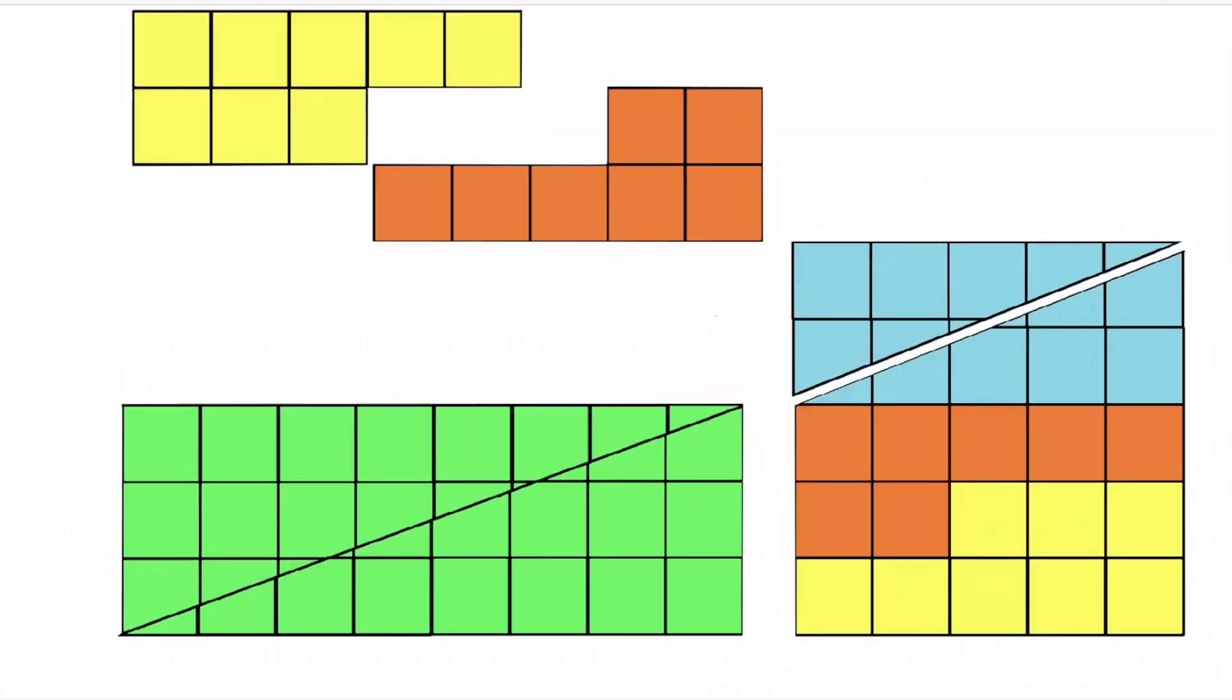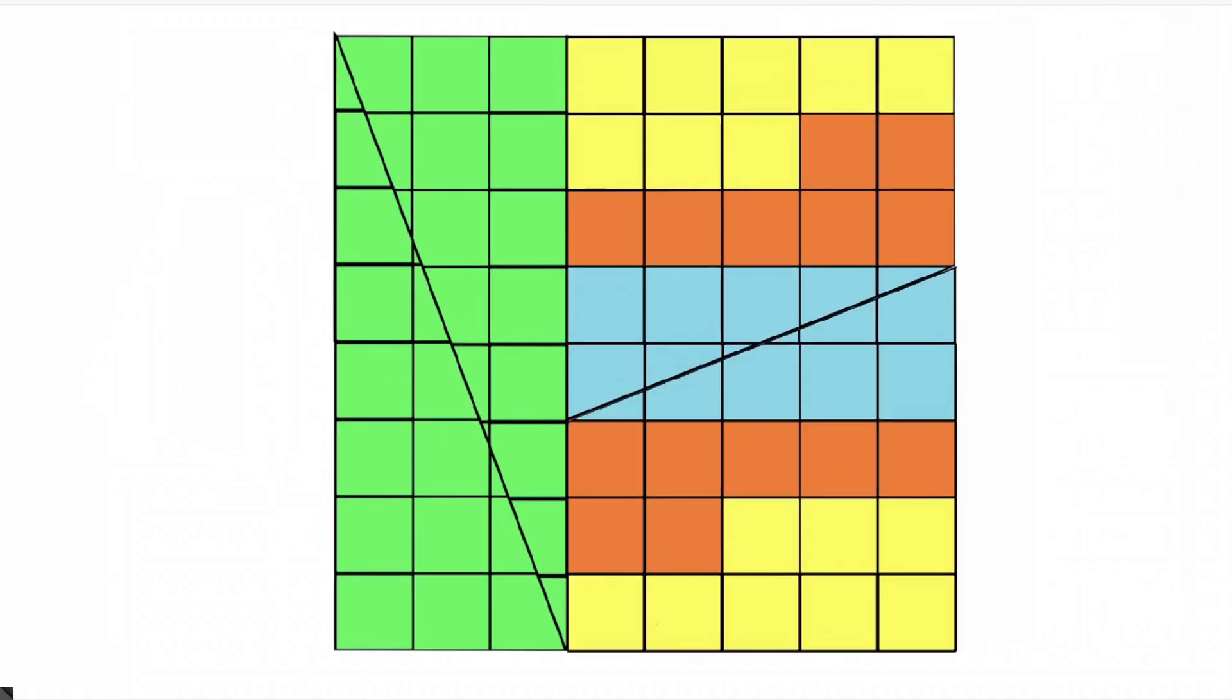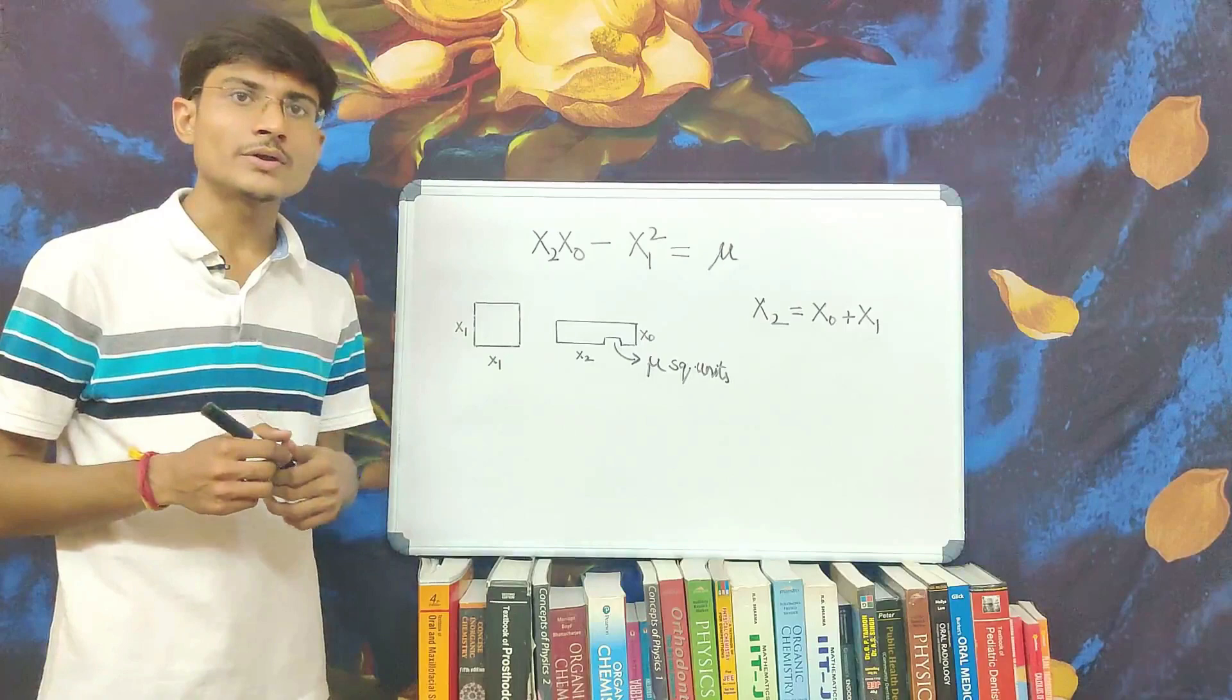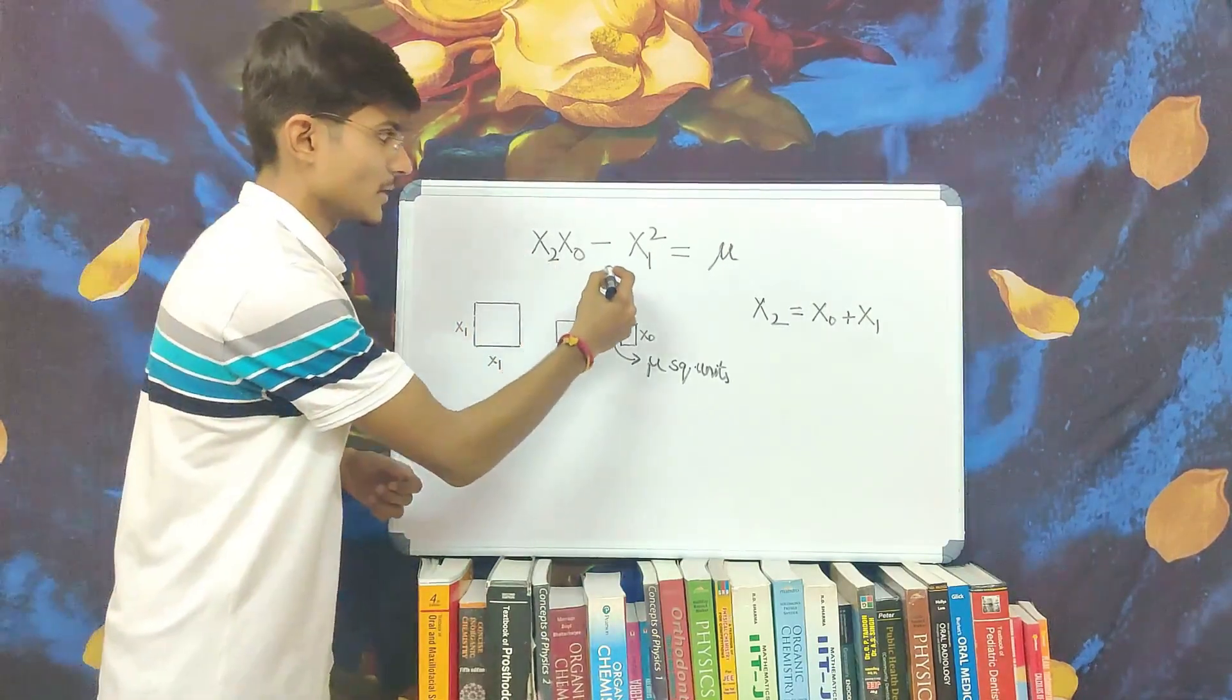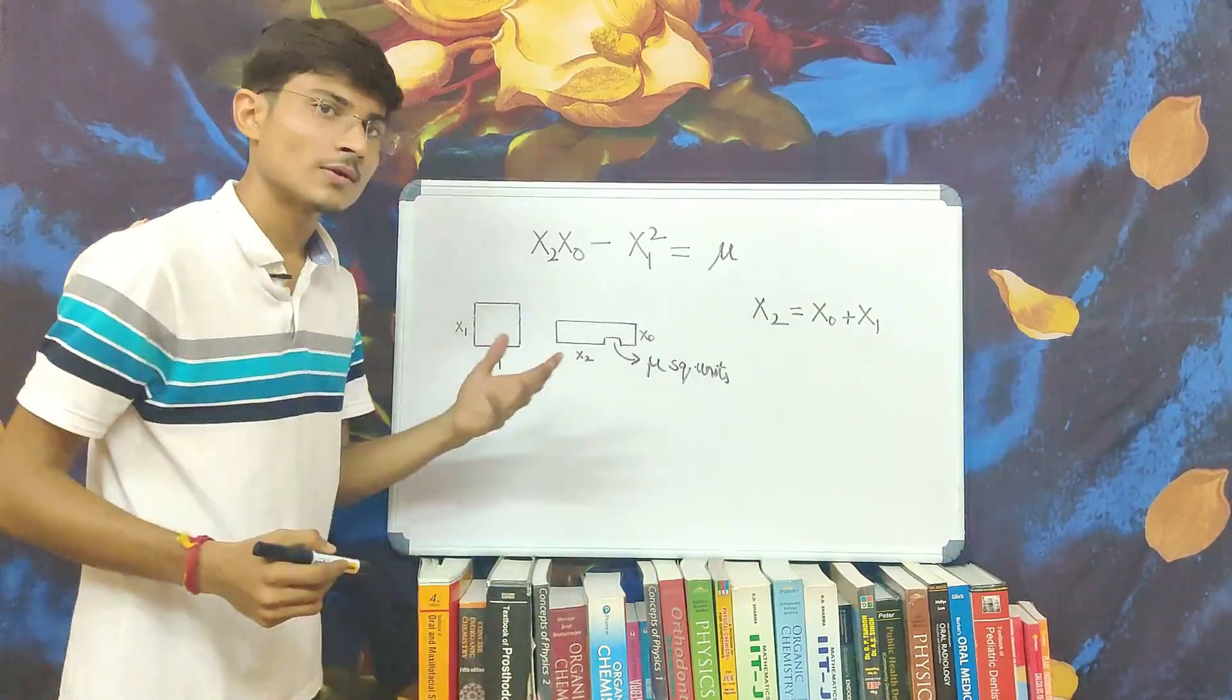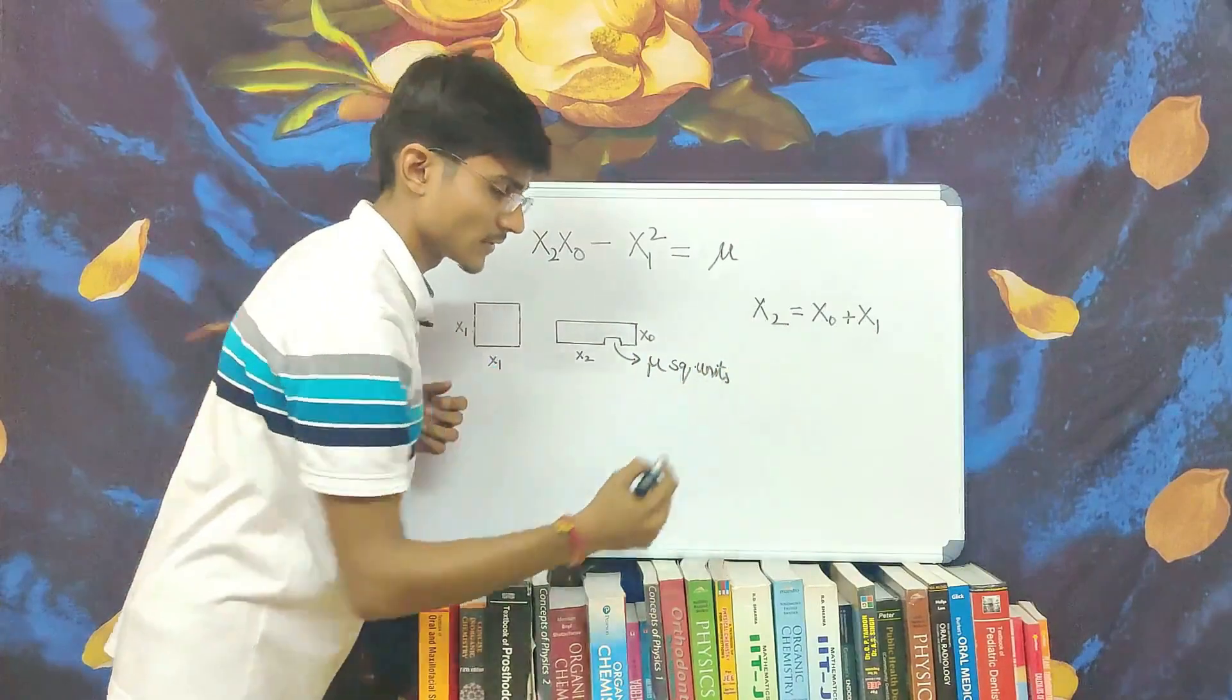You can create your own paradox with one or more missing cube by using the general equation x2 x0 minus x1 square equal to mu where mu is the missing area and x2 is equal to x0 plus x1.